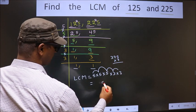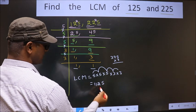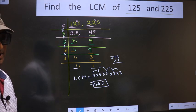3 times 5 is 15. 3 times 7 is 21. 3 times 3 is 9, plus 2 is 11. So we get 1, 1, 2, 5. This is our LCM.